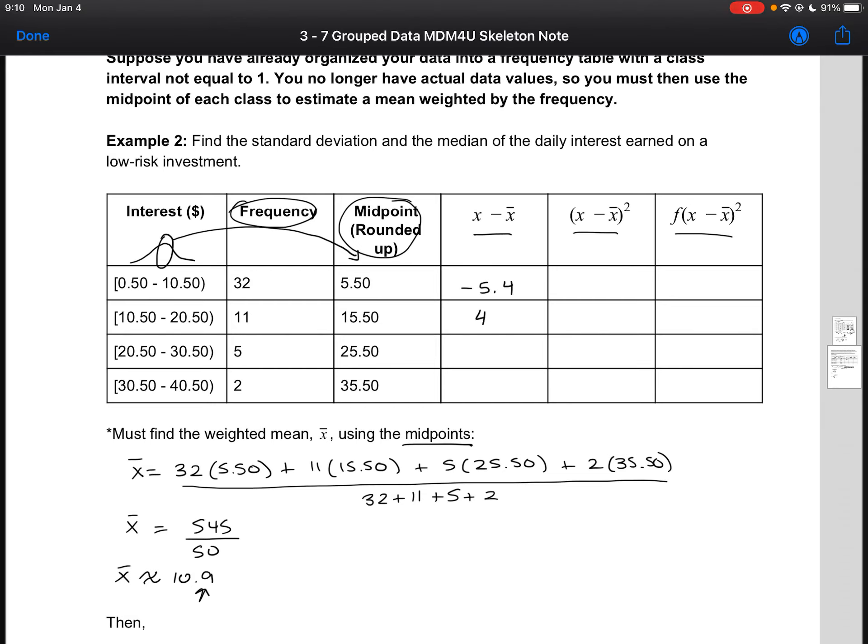So minus 5.4, 4.6, 14.6 and 24.6. Squaring them gives us 29.16, 21.16, 213.16.